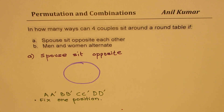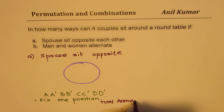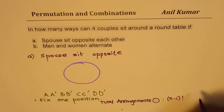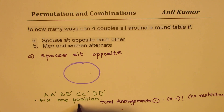Normally if people are sitting along a row, we will have N factorial arrangements. In a circular arrangement we will have N minus 1 factorial. So total arrangements in a circular way will always be N minus 1 factorial if there are no restrictions. That's a useful note to keep in mind.